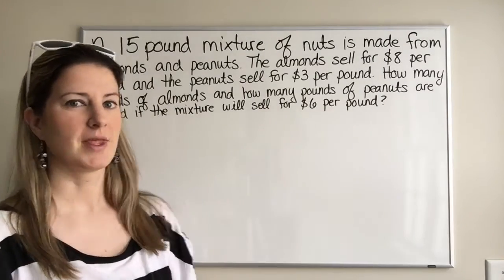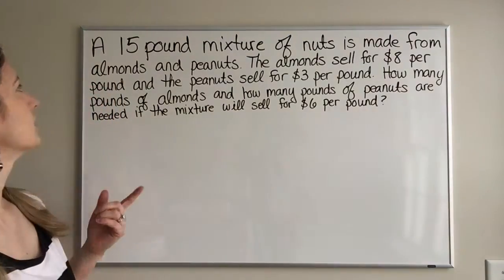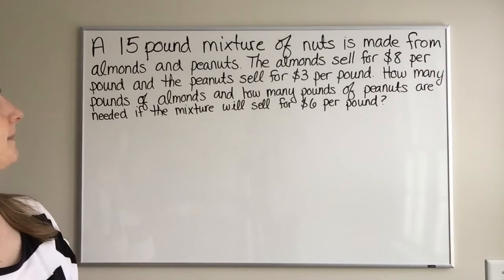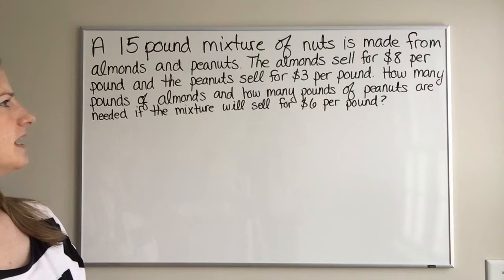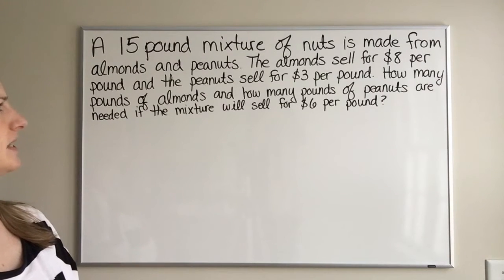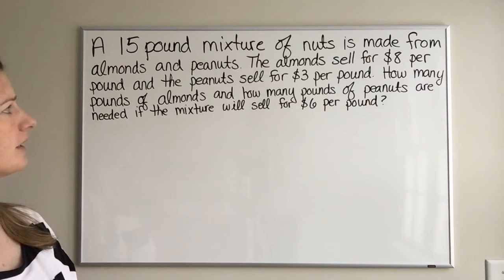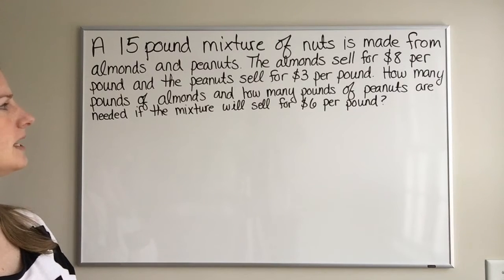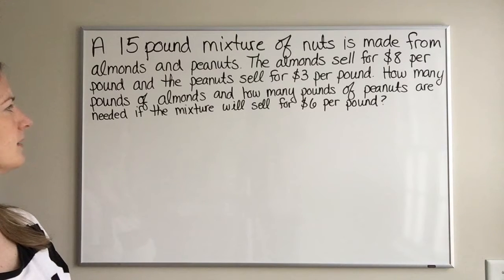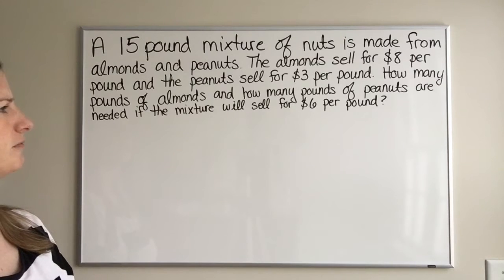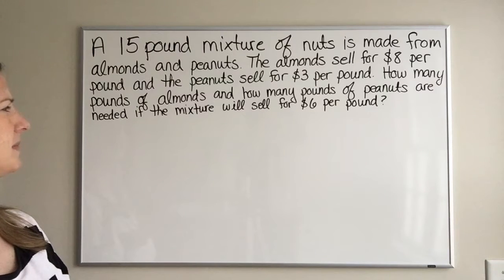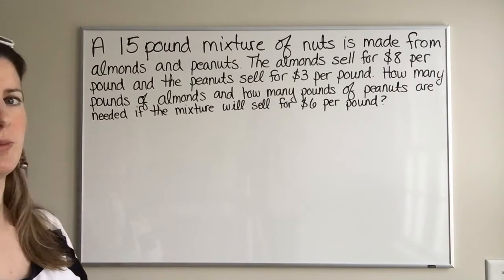Here's another word problem. A 15-pound mixture of nuts is made from almonds and peanuts. The almonds sell for $8 per pound and the peanuts sell for $3 per pound. How many pounds of almonds and how many pounds of peanuts are needed if the mixture will sell for $6 per pound?